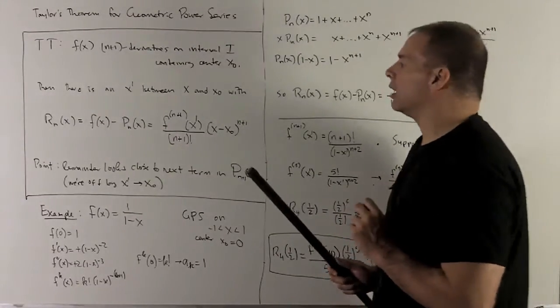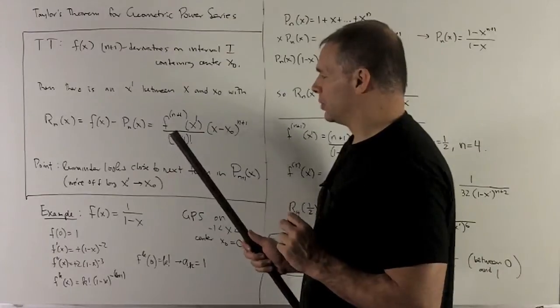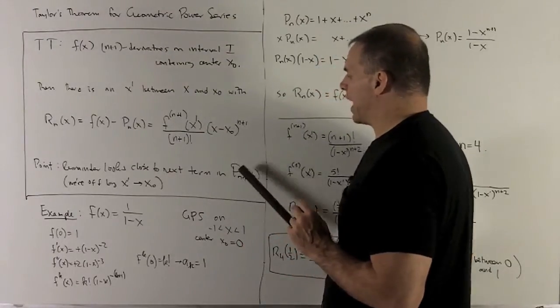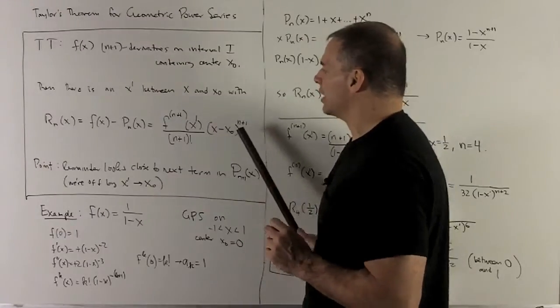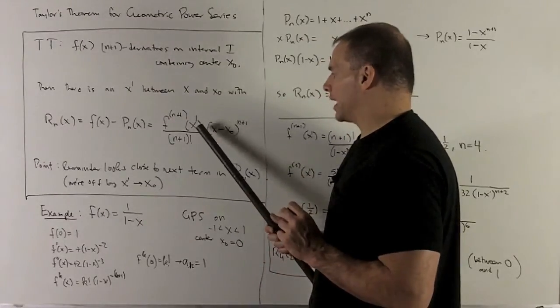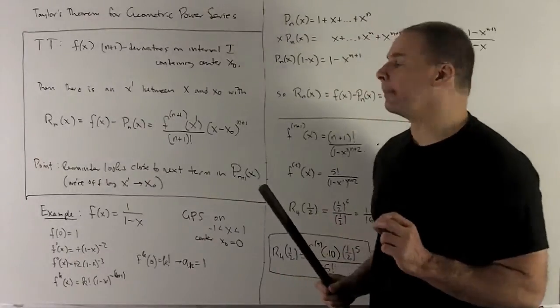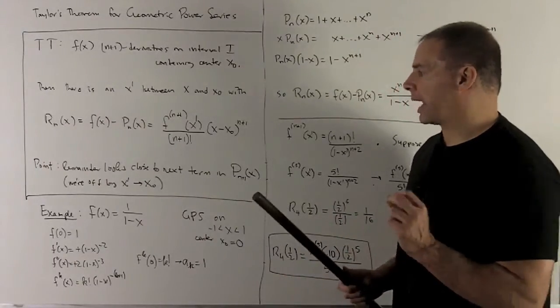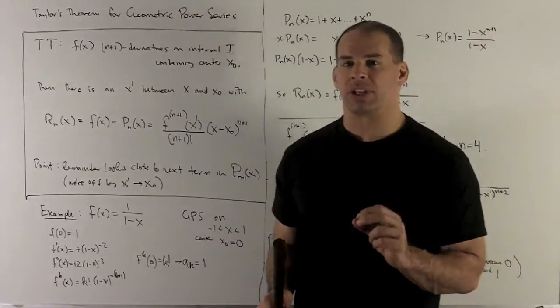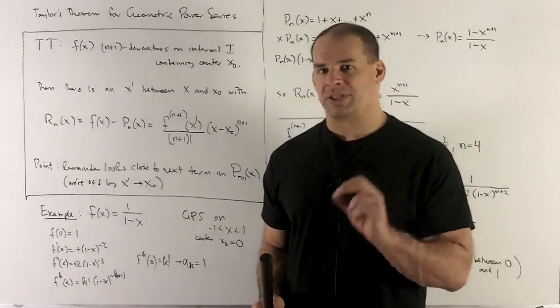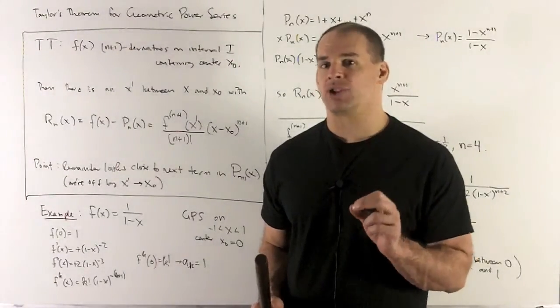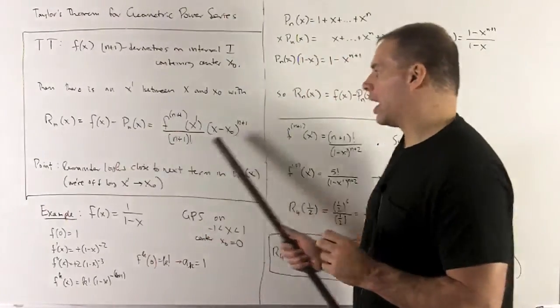So what's happening here, if I wanted to go out to the n plus first Taylor polynomial, I would want to add on a term that looks like this. The only difference is I would want an x0 in this spot instead of x prime. So the point of this example is to convince you when you do estimates, you're much better off using this business of maximums instead of trying to find the point where this equality happens.